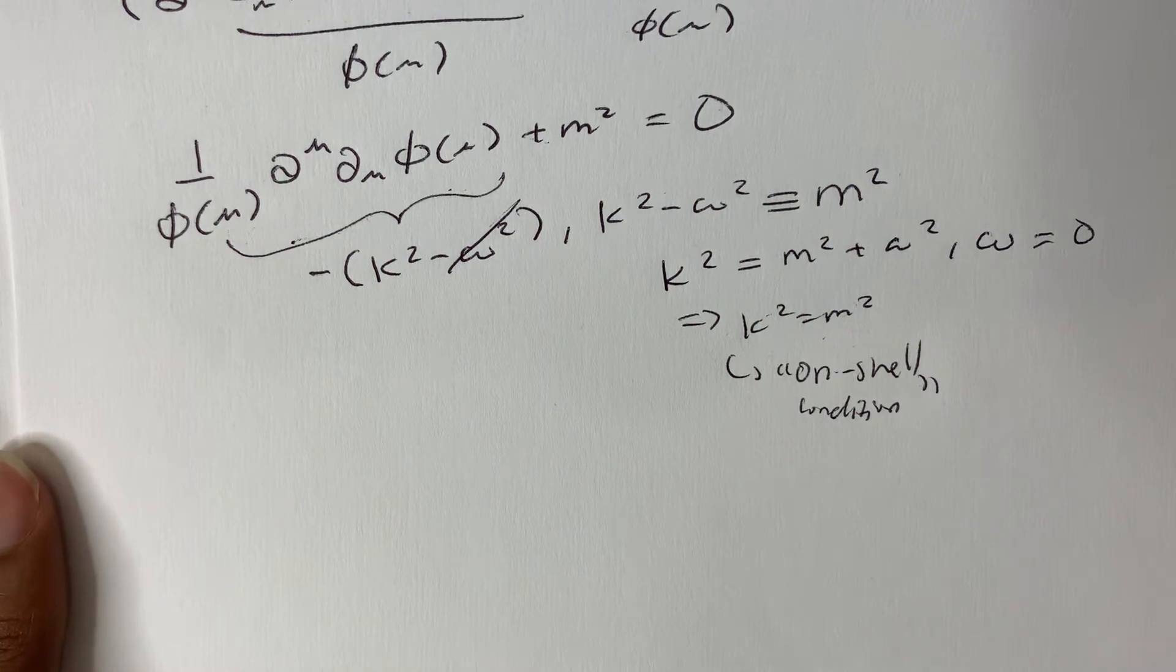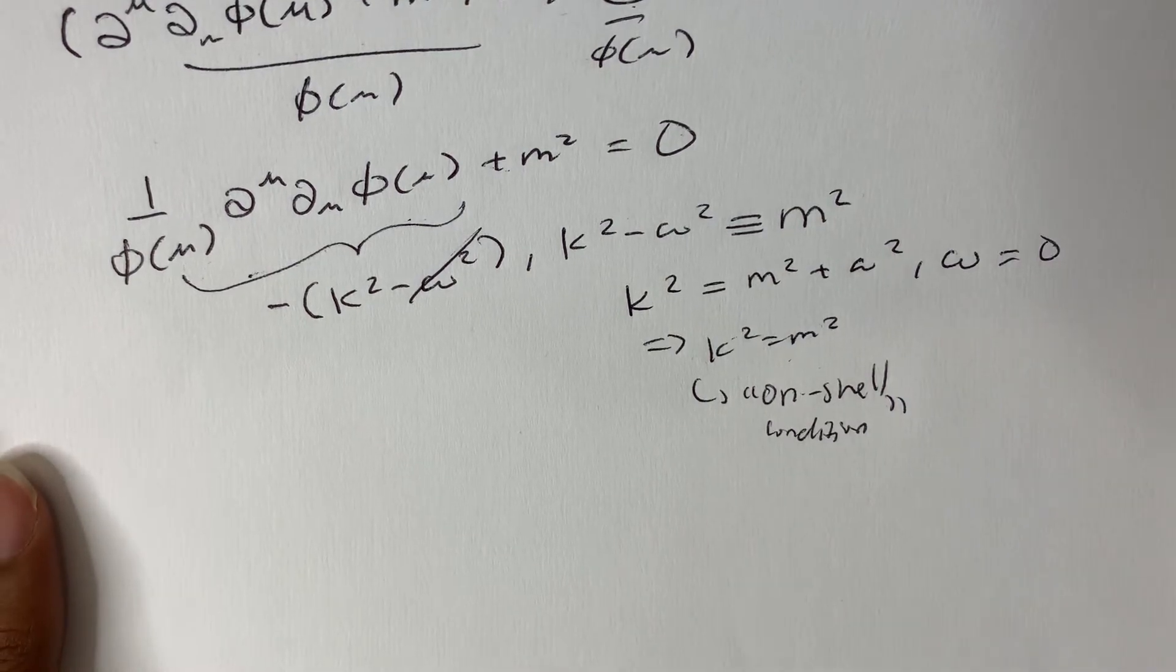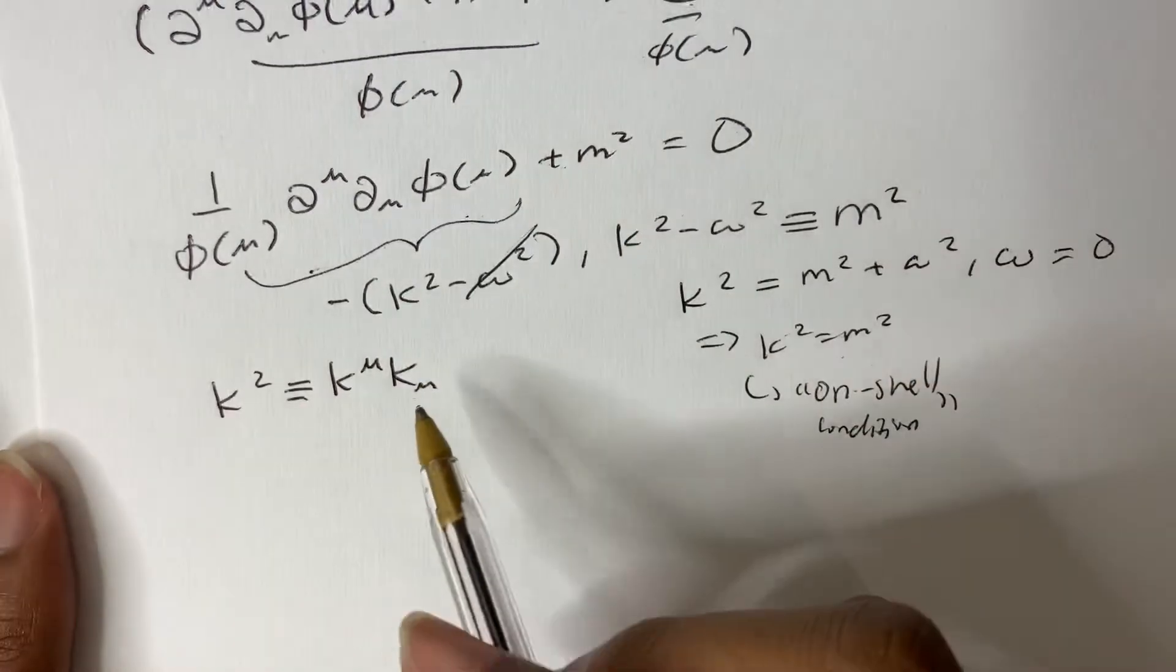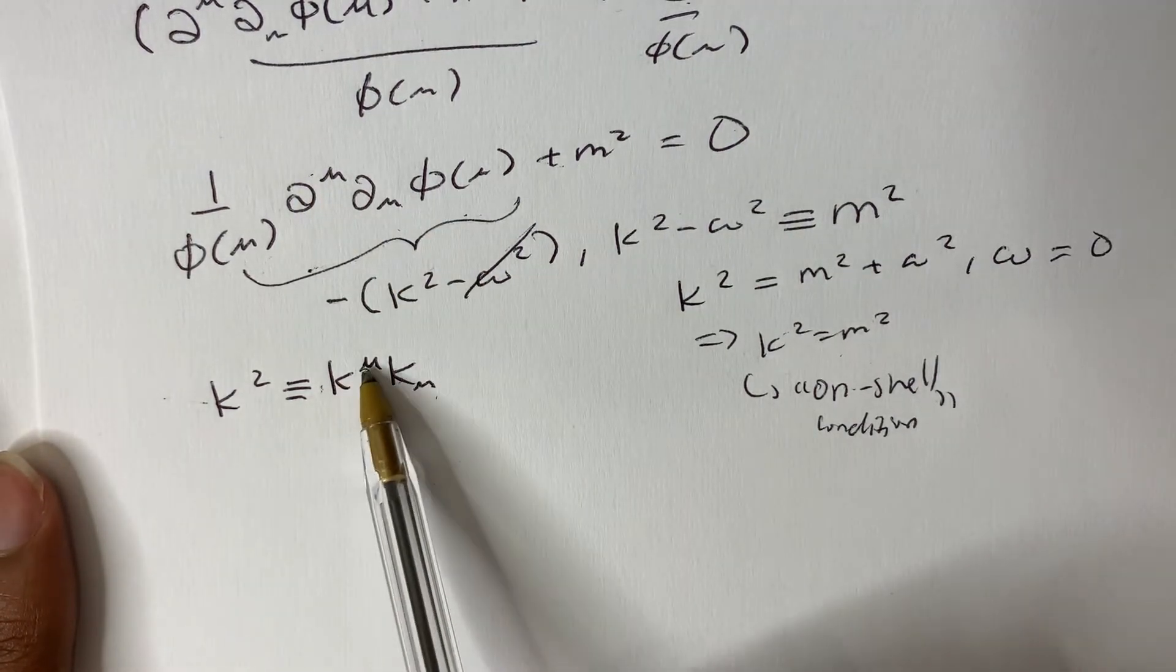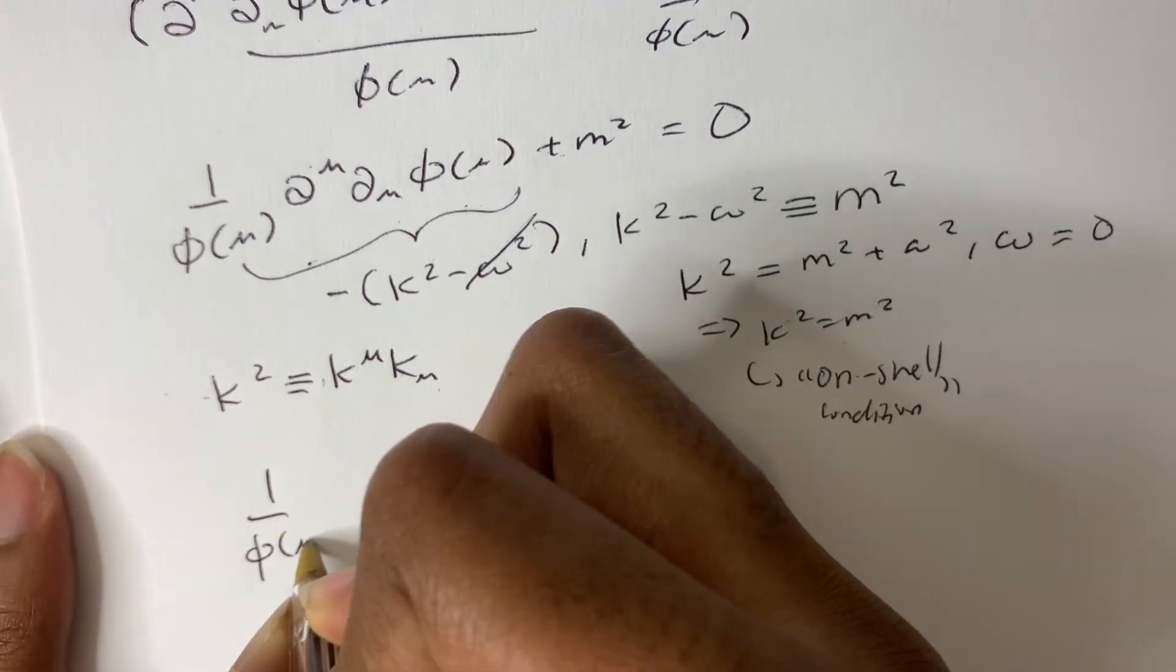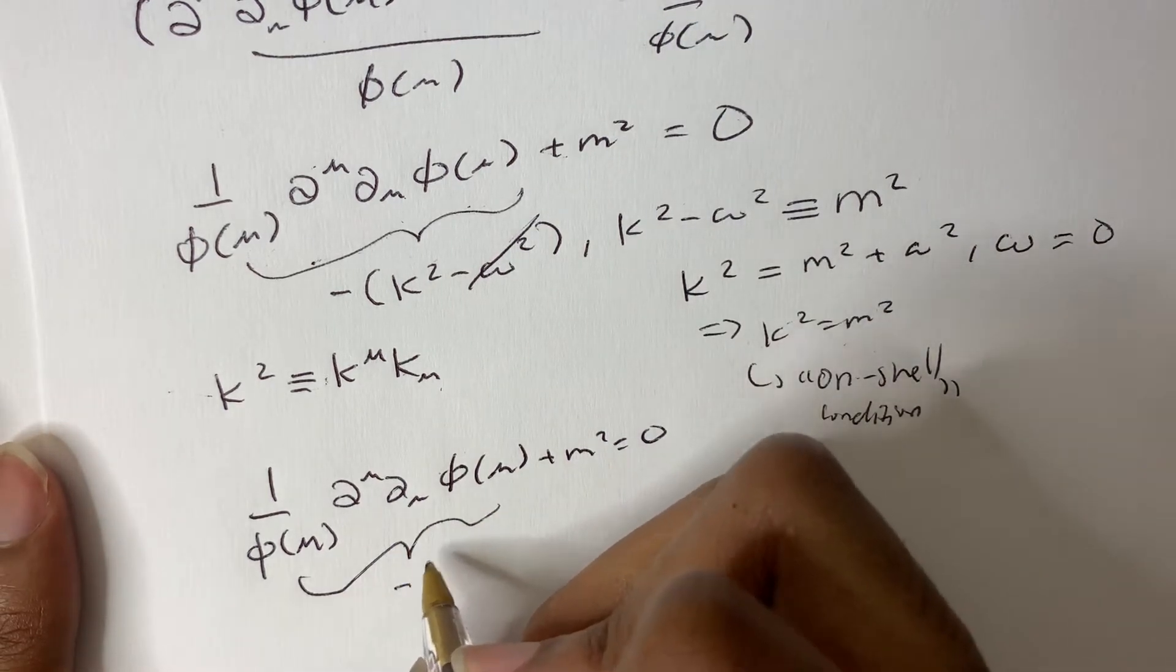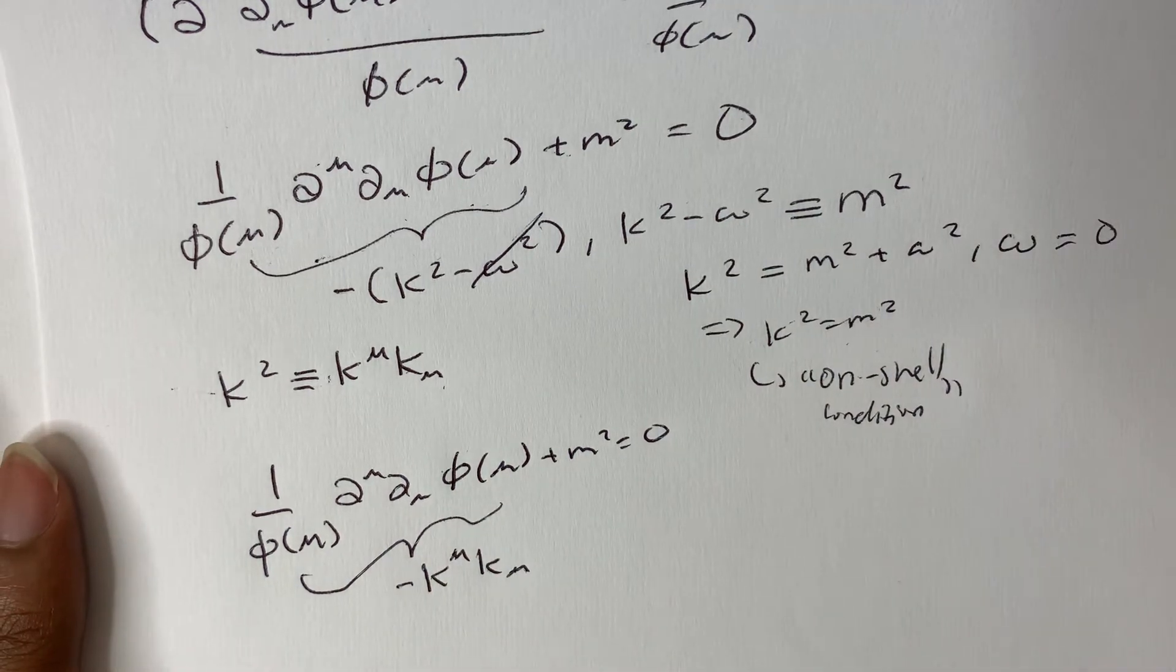I should have been a bit more precise in my notation here. K squared is defined as k mu k_mu. That's what I mean by k squared, because you have mu's here. So what we have here is we have 1 over phi of x mu, partial mu, partial mu, phi of x mu, plus m squared equals 0. And this is going to be minus k squared, or minus k_mu k^mu.